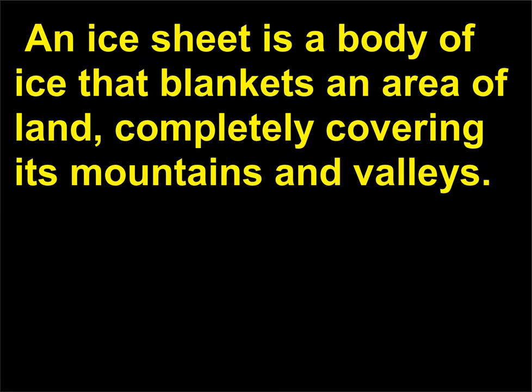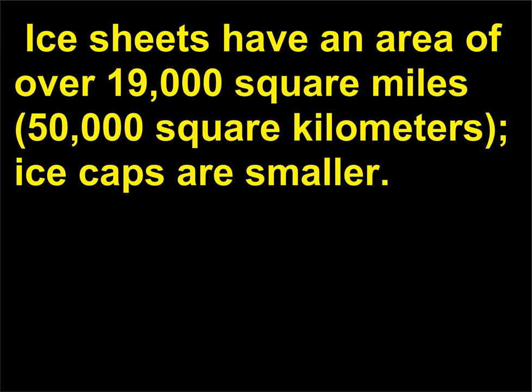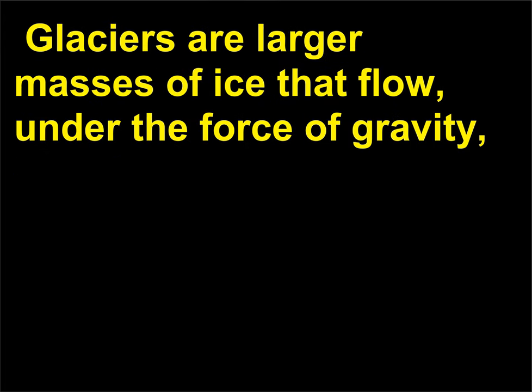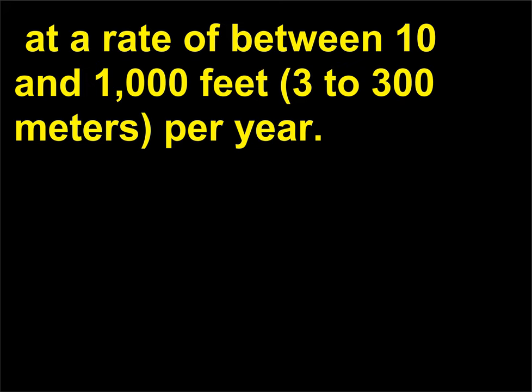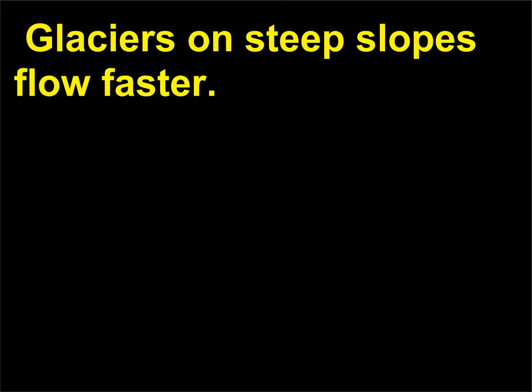An ice sheet is a body of ice that blankets an area of land, completely covering its mountains and valleys. Ice sheets have an area of over 19,000 square miles (50,000 square kilometers); ice caps are smaller. Glaciers are larger masses of ice that flow under the force of gravity at a rate of between 10 and 1,000 feet (3 to 300 meters) per year. Glaciers on steep slopes flow faster.